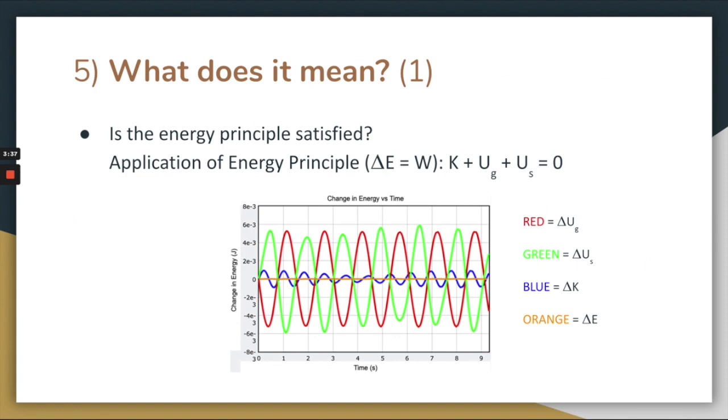So is the energy principle satisfied? Well, from earlier, we said that no work is done in our system, which includes the spring, mass, and the earth. By the energy principle, the work done is equal to the change in total energy of the system. If no work is done, the change in total energy should be equal to zero, which is exactly what we see here with the orange line. Therefore, the energy principle is satisfied.